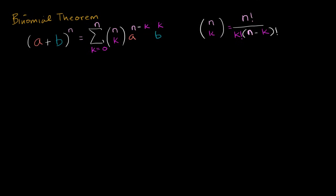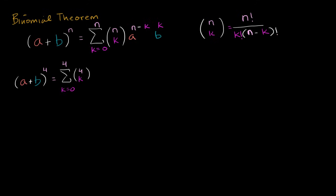So a plus b to the fourth power, by the binomial theorem, equals the sum from k equals zero to four of: four-choose-k times a to the four minus k power times b to the k power. Let's actually just do the sum term by term.